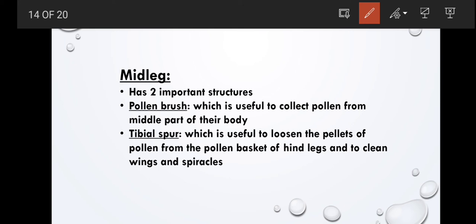Midleg is situated at the mesothoracic region. Midleg has two important structures: one is pollen brush and another one is tibial spur. Pollen brush is useful to collect the pollen from the middle part of the body. And tibial spur which is useful to loosen the pellets of pollen from the pollen basket of hindleg and to clean the wings and spiracles.